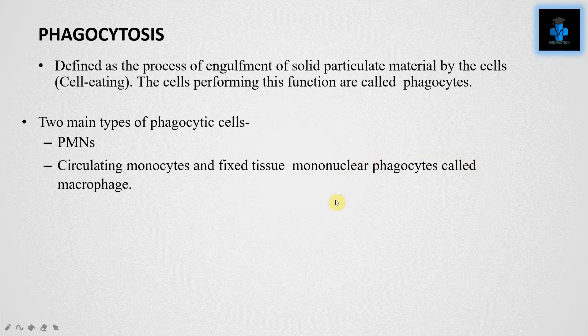Next is phagocytosis. It is defined as the process of engulfment of solid particulate materials by cells — otherwise called cell eating. The cells performing this function are called phagocytes. The two main types of phagocytic cells are PMNs — polymorphoneutrophils — and circulating monocytes and fixed tissue mononuclear phagocytes called macrophages.